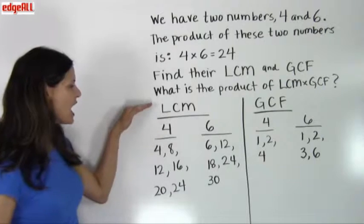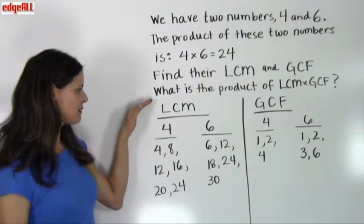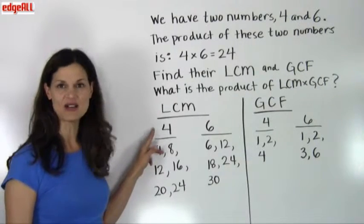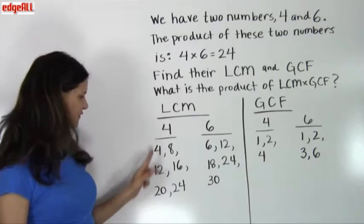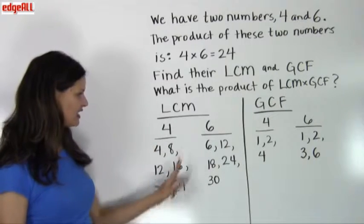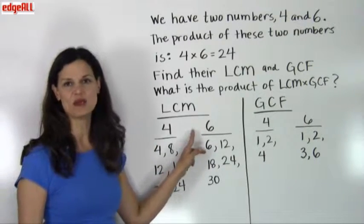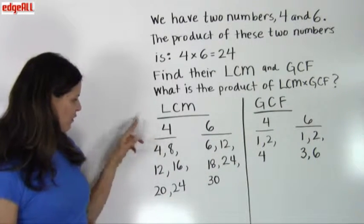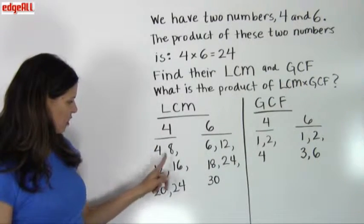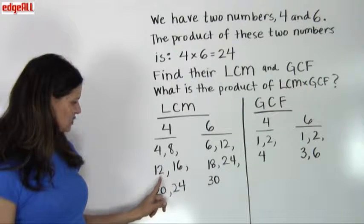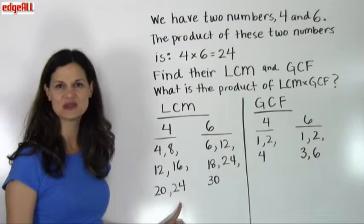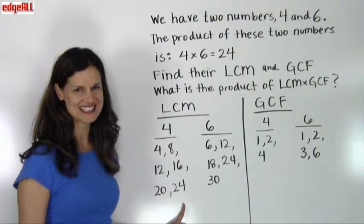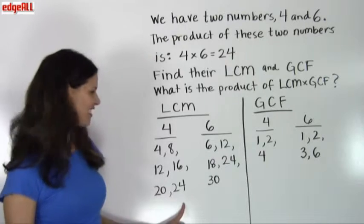So for the least common multiple, I've listed out a few of the multiples of 4 and a few of the multiples of 6. For 4 we have 4, 8, 12, 16, 20, 24, and we know that these lists go on and on forever.